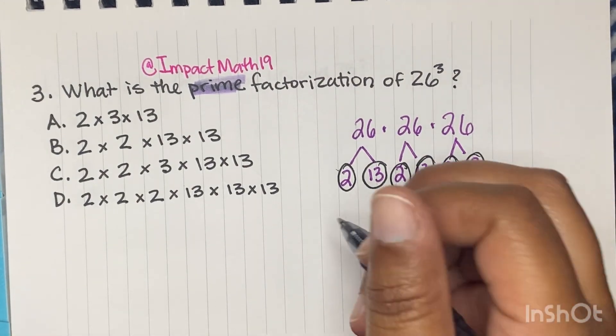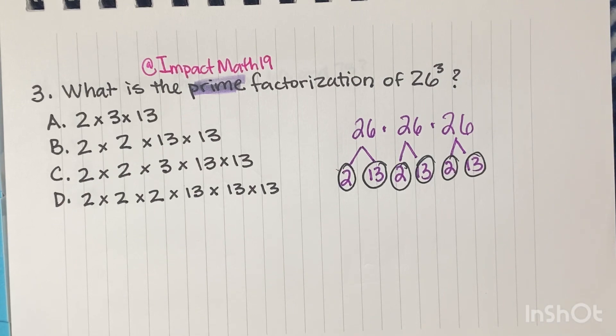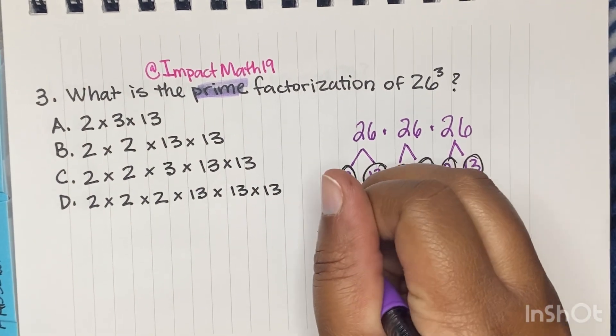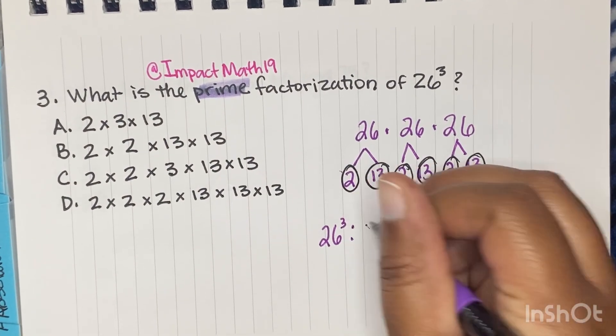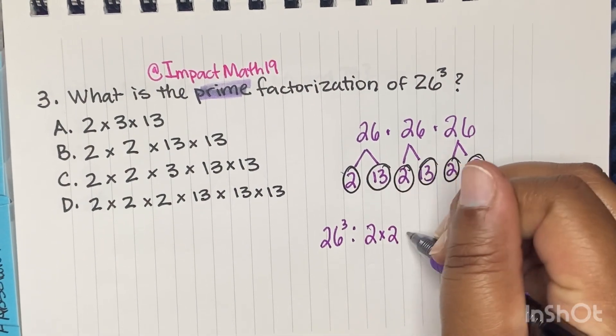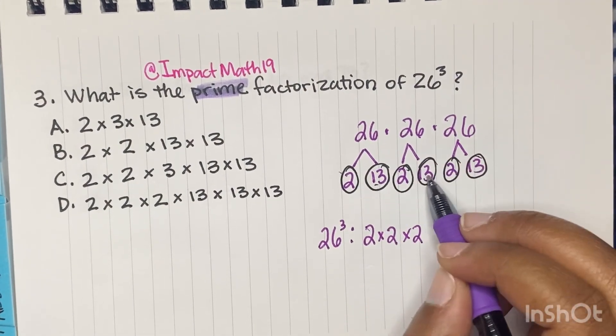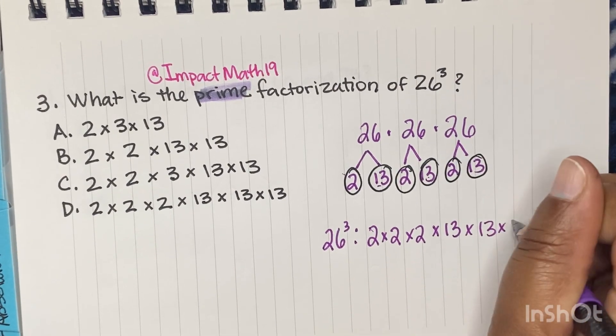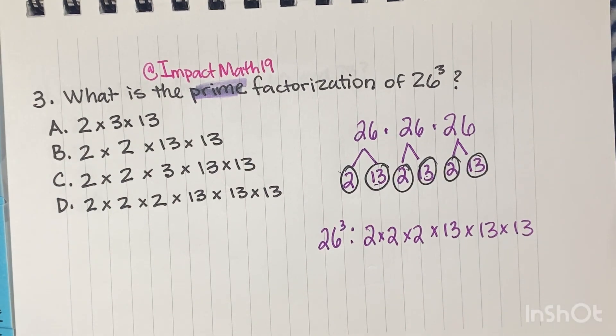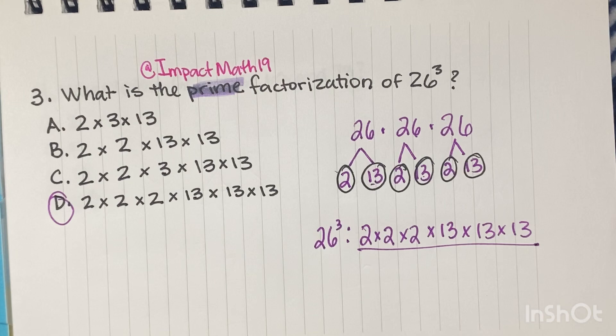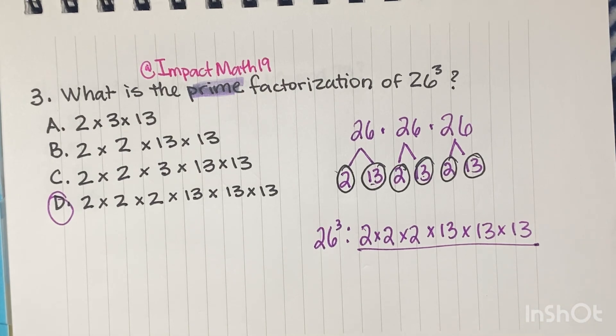All right. So now let's list them all out. So for 26 to the third power, we have how many twos? One, two, three. And we have one, two, three thirteens. So by now I'm hoping you see your answer is D. Alrighty, let's keep on learning.